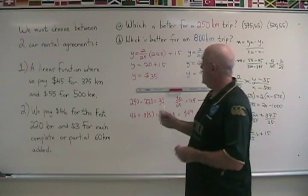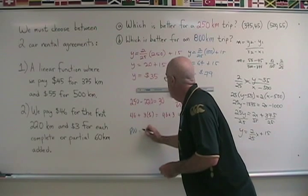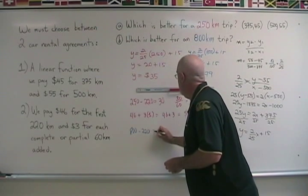For the 800 kilometer trip, we have 800 minus 220 equals 580.